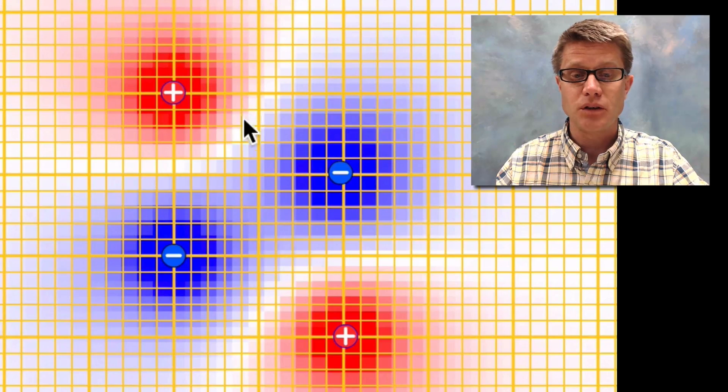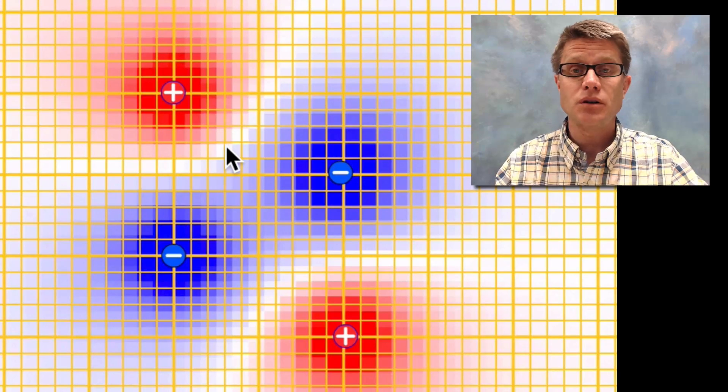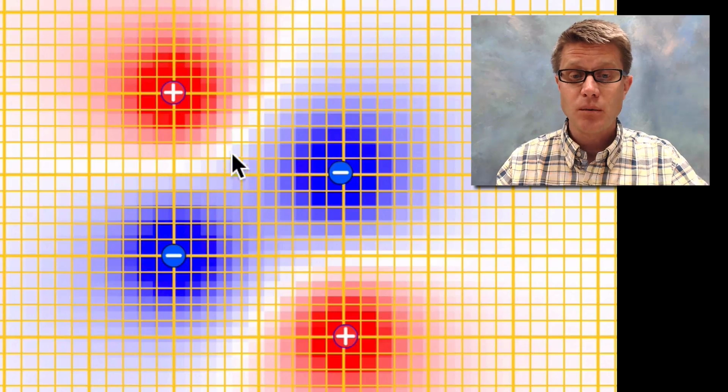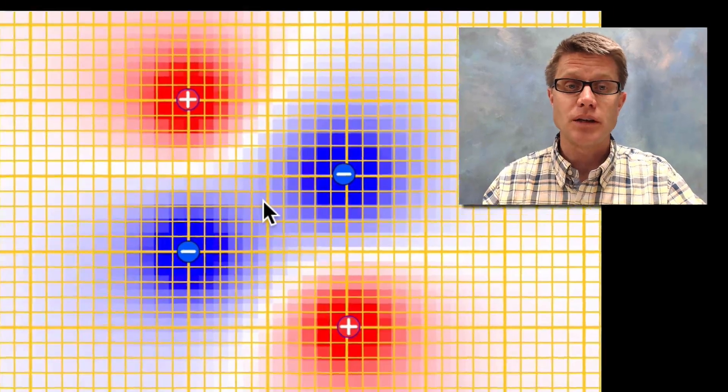If I pause this for a second we would see right here in the middle, since it's white in color there's going to be no charge. Zero volts. But you can see right here in the middle there's going to be a certain amount of a negative charge right there.